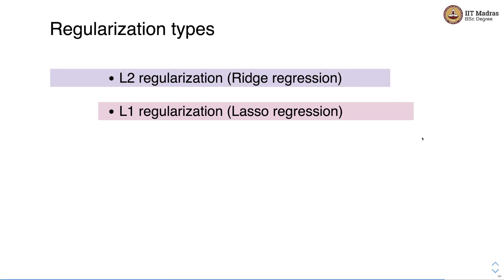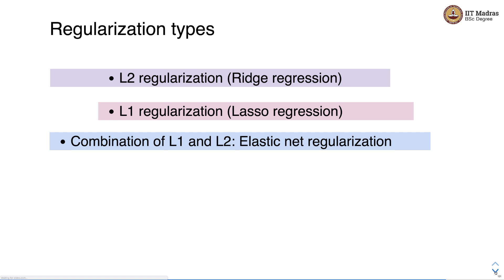There are three types of regularization. One is L2 regularization that leads to a ridge regression model, then L1 regularization that leads to a lasso regression model, and then the combination of L1 and L2 which is called elastic net regularization. We will study ridge and lasso regression in detail in this course.